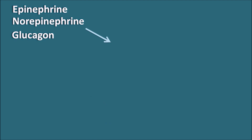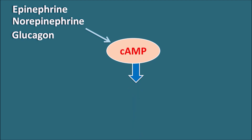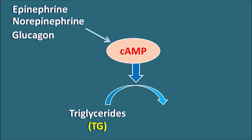These mediators mainly increase cyclic AMP. This cyclic AMP acts as an important secondary messenger which is responsible for lipolysis. Cyclic AMP can activate few of the protein kinases which can convert the triglycerides into free fatty acids.